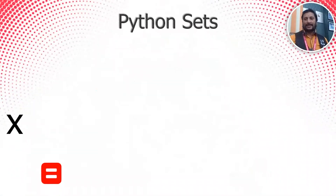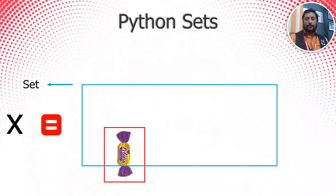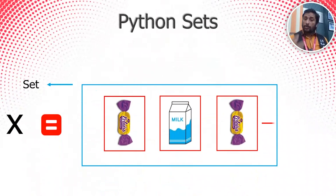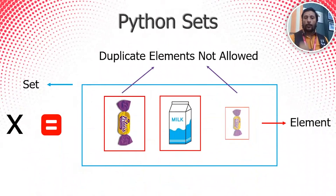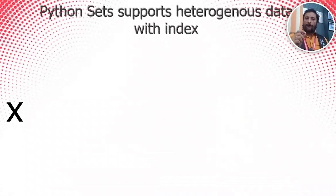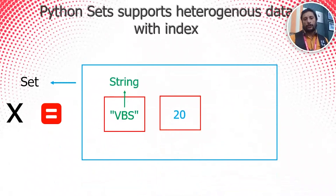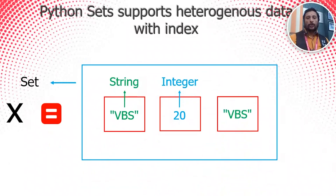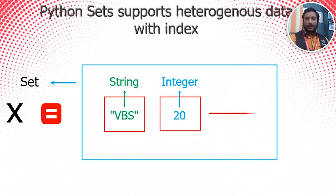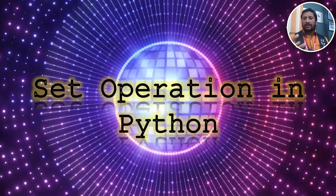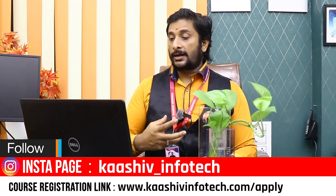Now we are going to talk about Python sets in detail. A set can store heterogeneous data — for example, chocolate or milk alongside numbers. Duplicate elements are automatically removed. You cannot access elements by index. We will cover how to create a set, insert and delete items, and perform union operations.